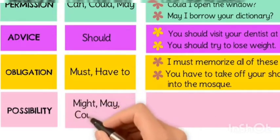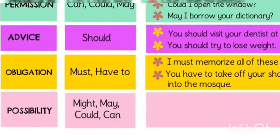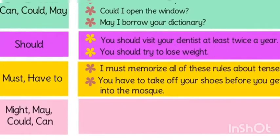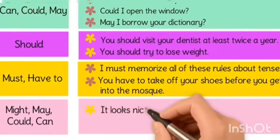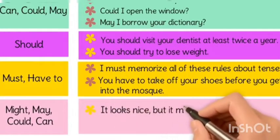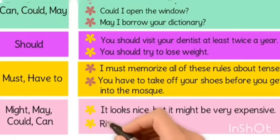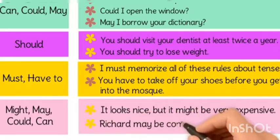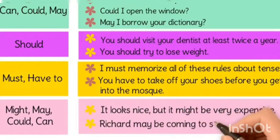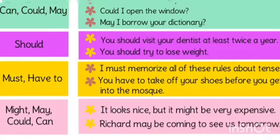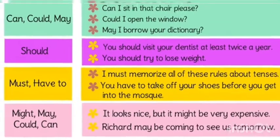For possibility, we use may, might, and could. Let's see some examples. It looks nice but it might be very expensive — the possibility is that it may be expensive. Richard may be coming to see us tomorrow — showing the possibility of Richard coming tomorrow.